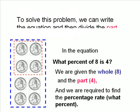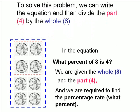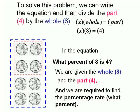Using this equation, we can solve this problem by writing the equation and then dividing the part, four, by the whole, eight. That is, x times the whole equals the part. Substituting the whole equals eight and the part equals four, we get this equation.